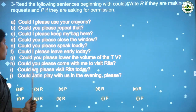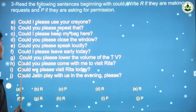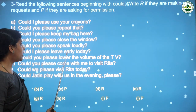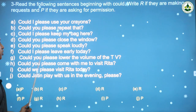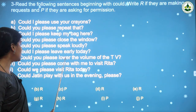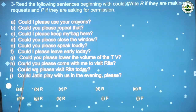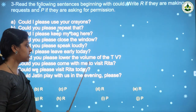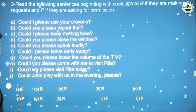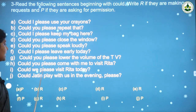'Could you please speak loudly?' — it is a request, write R. Next: 'Could I please leave early today?' — the boy or girl is asking permission to leave early, so write P. Then: 'Could you please lower the volume of the TV?' — it is a request, write R. 'Could you please come with me to visit Rita?' — it is a request, write R. 'Could we please visit Rita today?' — write P for permission.